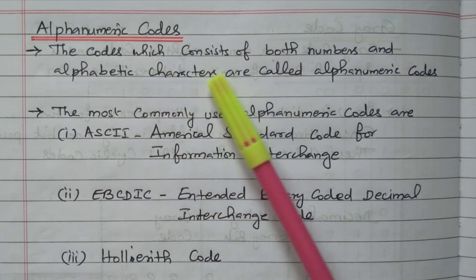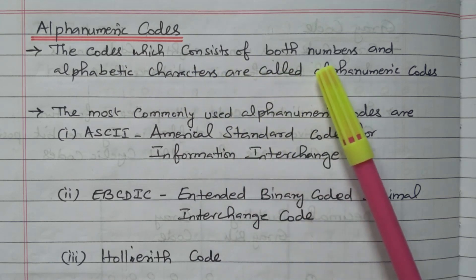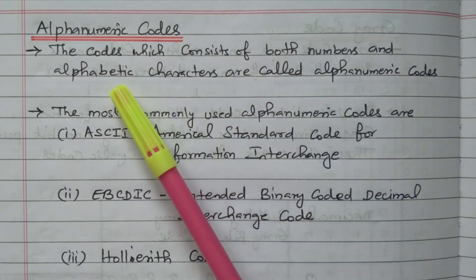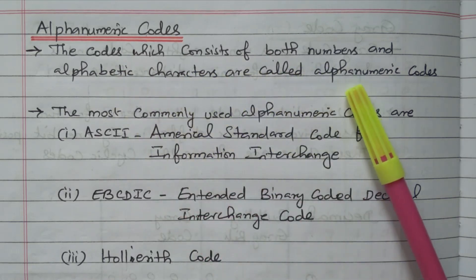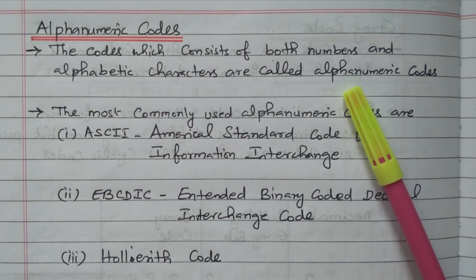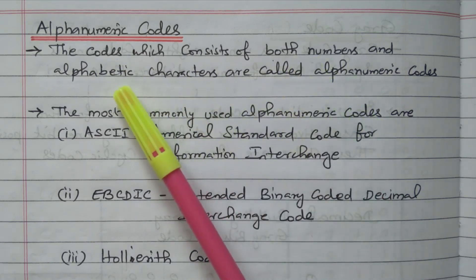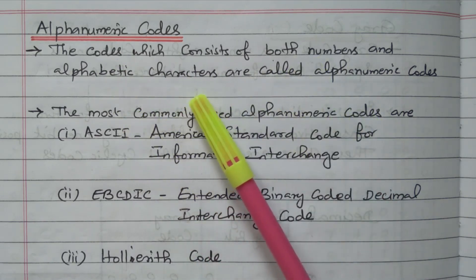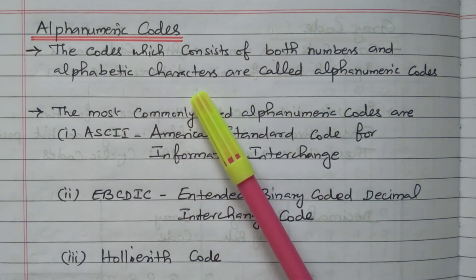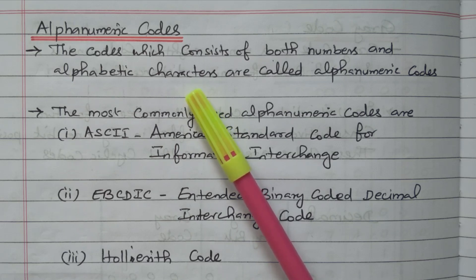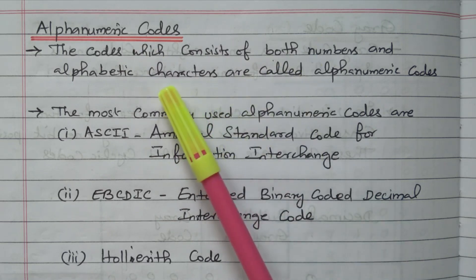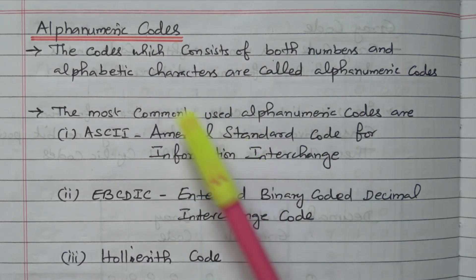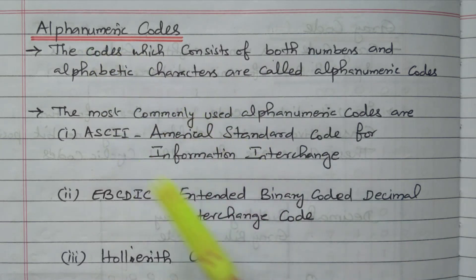The code which consists of both numbers and alphabetic characters is called an alphanumeric code. Here we have numbers as well as alphabets. All other codes have numbers only — zeros and ones. In this alphanumeric code, we have both numbers and alphabets, so it is called an alphanumeric code.